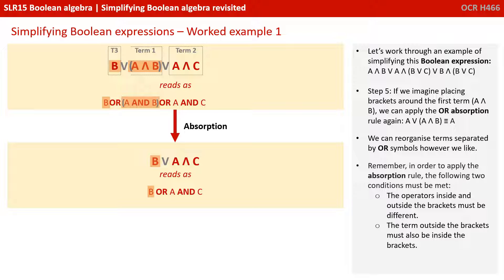Step five: If we imagine placing brackets around the first term A and B, we can apply the absorption OR rule again. We can reorganize terms separated by OR symbols however we like. And we can see here we have another situation where we can simplify B or A and B down to just B.